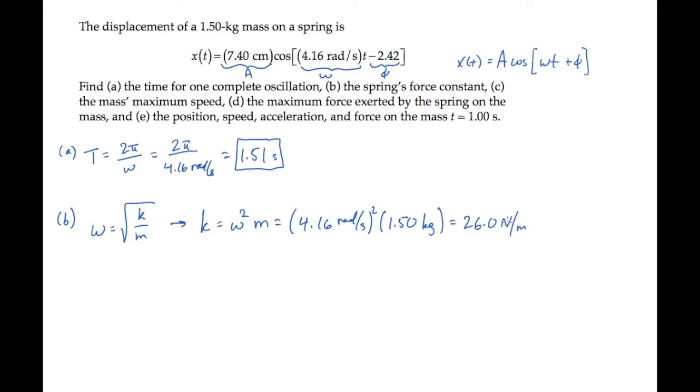Part C asks for the mass's maximum speed. The mass's velocity is the derivative of its position, so that equals minus A omega sine omega t plus phi, where this quantity is the maximum speed, A times omega. Calculate that to see that it equals 30.8 centimeters per second, or 0.308 meters per second.